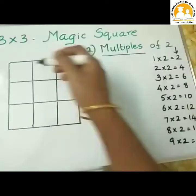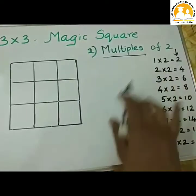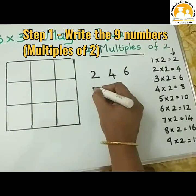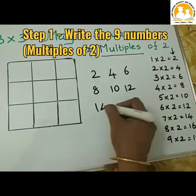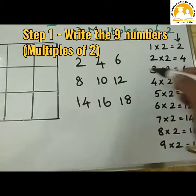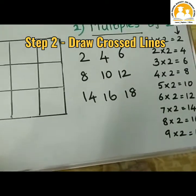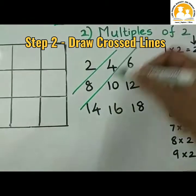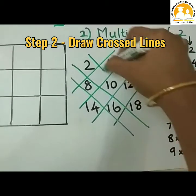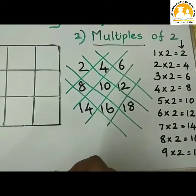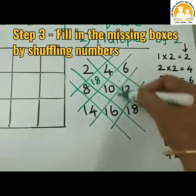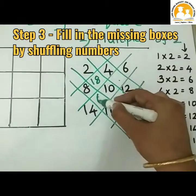I am going to fill in the multiples of 2 so that row, column, and diagonal add up to the same number. Step 1: write the multiples of 2 — 2, 4, 6, 8, 10, 12, 14, 16, 18. Step 2: draw the crossed lines. Step 3: fill in the empty boxes by shuffling — 18 comes here and 2 comes here; 6 comes here and 14 comes here.